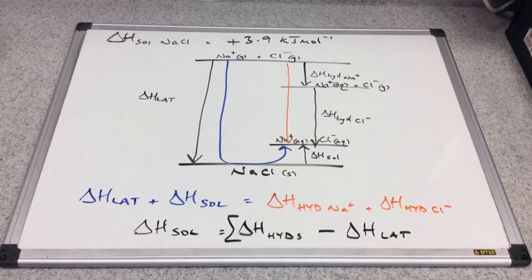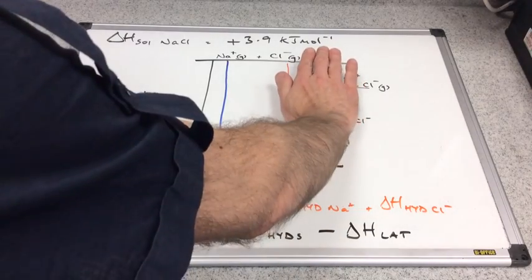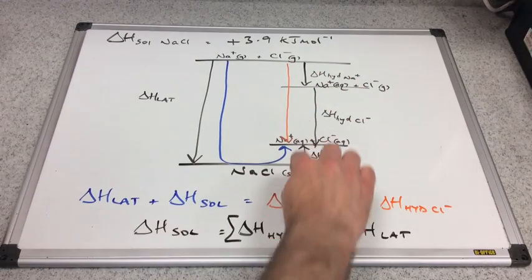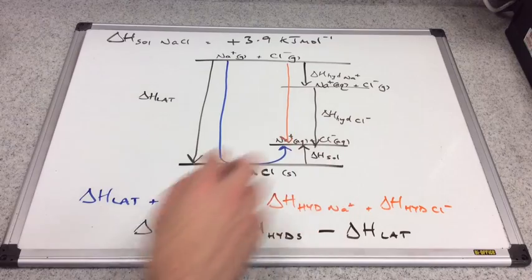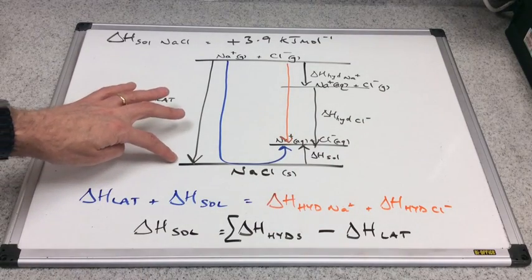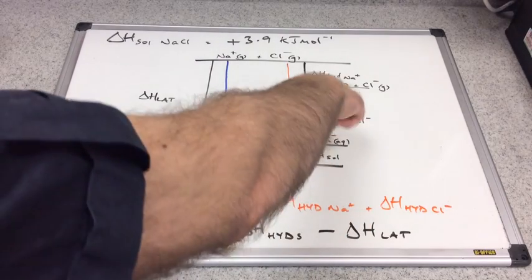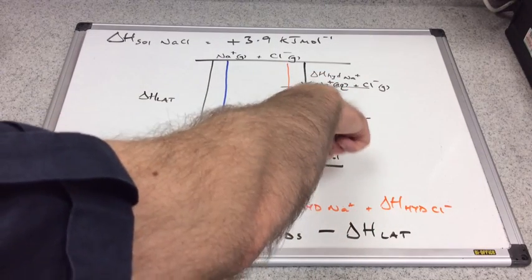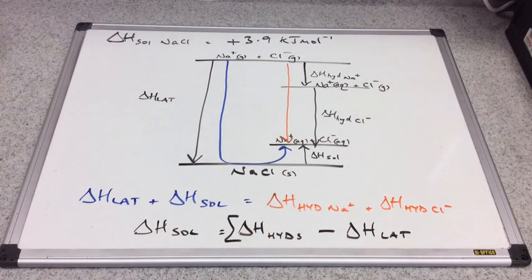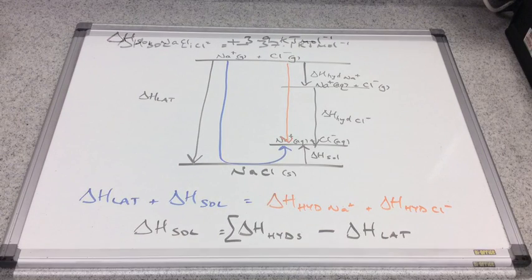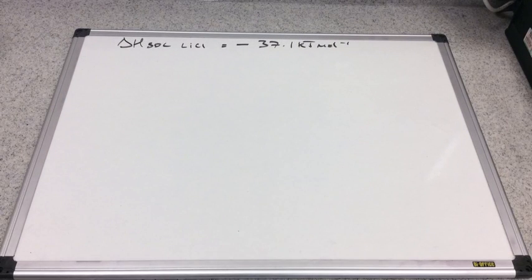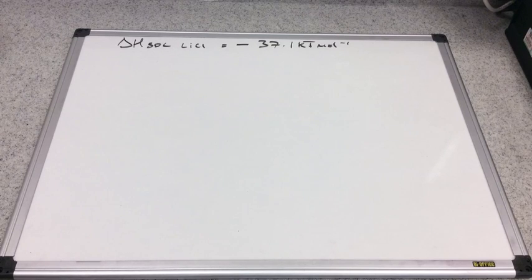You can probably see that if the orange line was longer — in other words if the hydration enthalpies were more exothermic than the lattice enthalpy — then the solution arrow would point down instead. The enthalpy change of solution for lithium chloride is minus 37.1 kilojoules per mole, so it's an exothermic process when it dissolves in water.